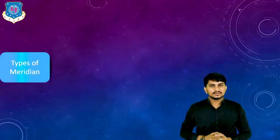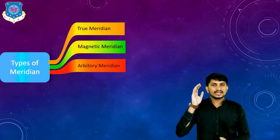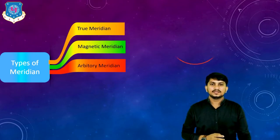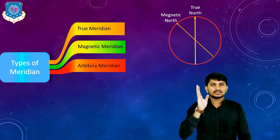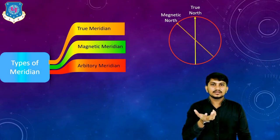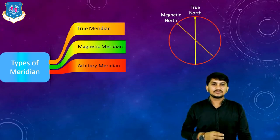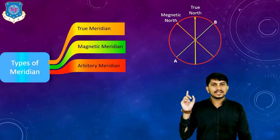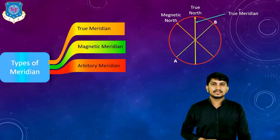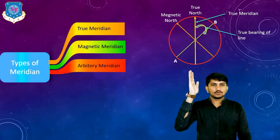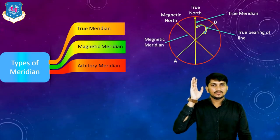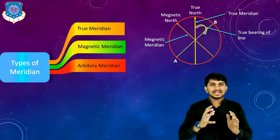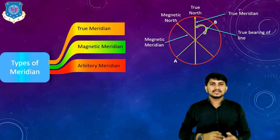Now let us see various types of meridian. There are three types: first is true meridian, second is magnetic meridian, and third is arbitrary meridian. Suppose there is the earth — this is the true North, and this is the magnetic North which is achieved by the magnetic compass. The direction shown by the magnetic compass is called as magnetic North direction. The true meridian line is the fixed reference line which connects true North and true South point.